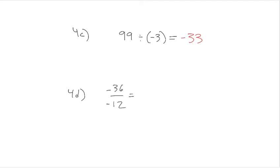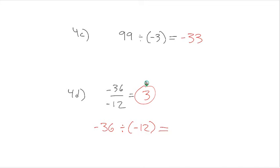For 4d, we have negative 36 over negative 12 — that's actually a division problem: negative 36 divided by negative 12. Any fraction can be written as a division problem. In this case, we have a negative divided by a negative, so the answer is positive. There are three 12s in 36, so the answer is positive 3.